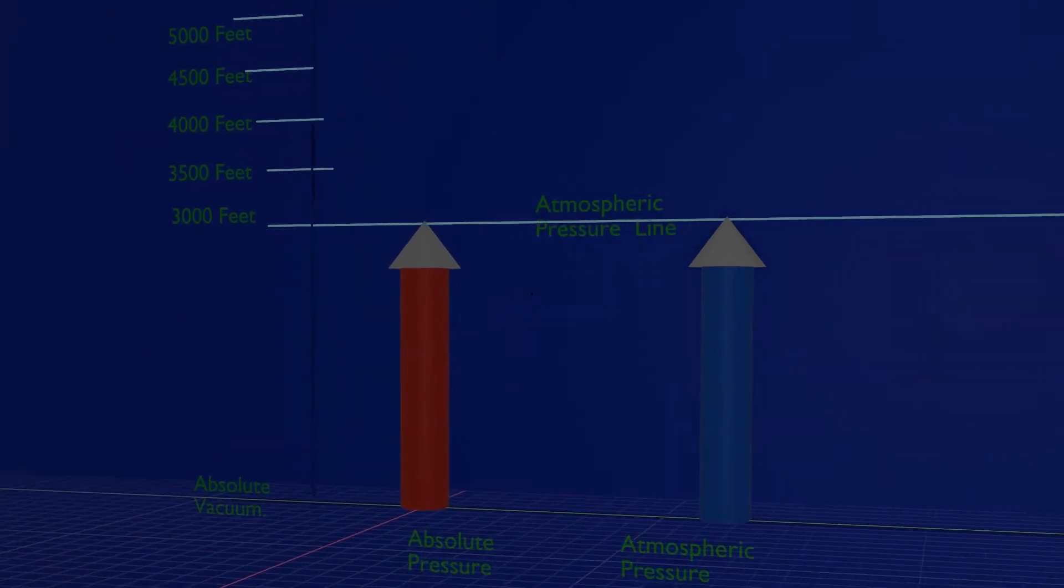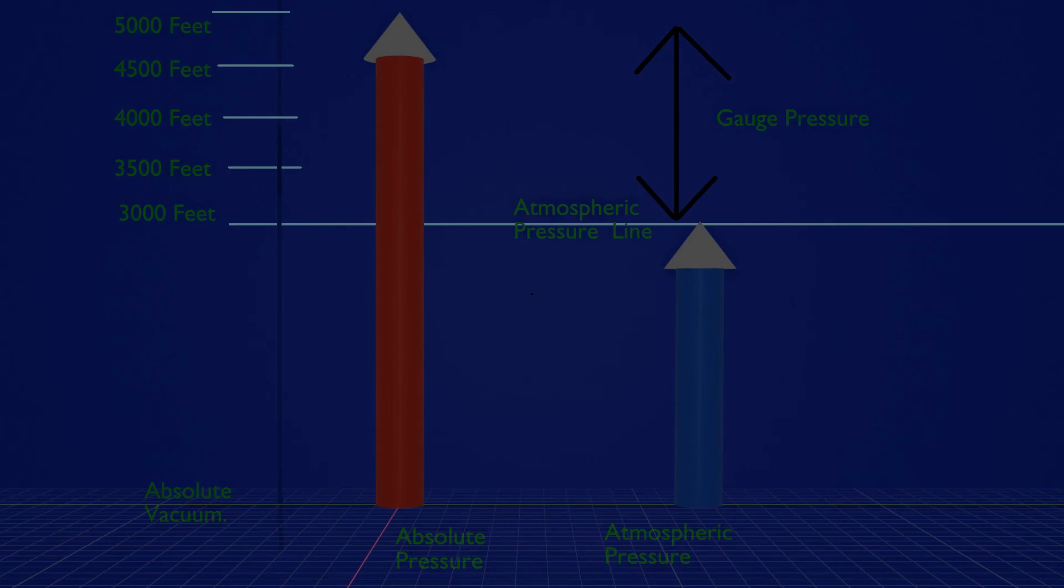When the difference between absolute pressure and atmospheric pressure is greater than zero, then gauge pressure exists.